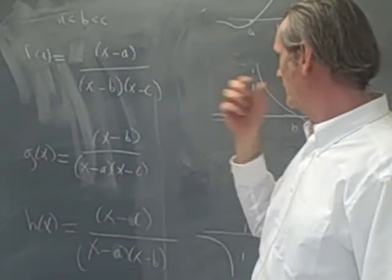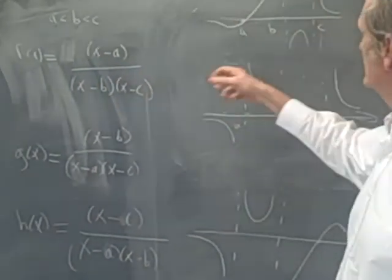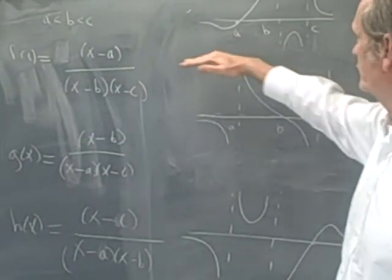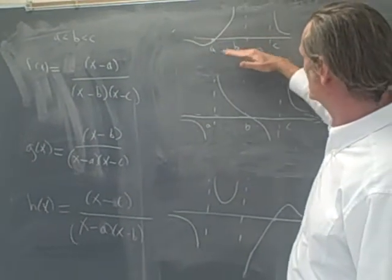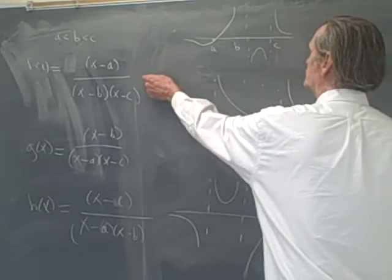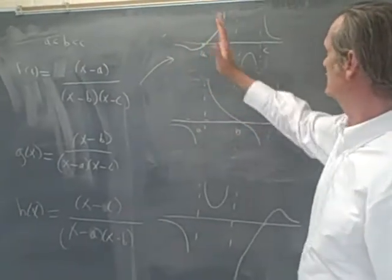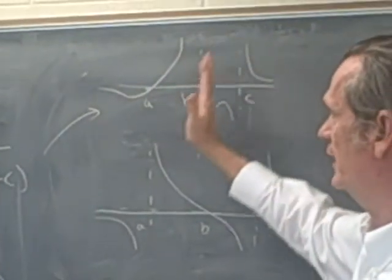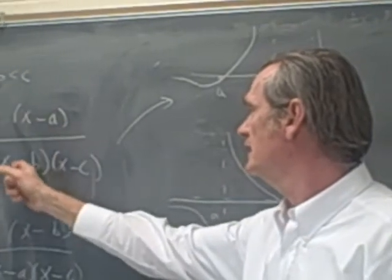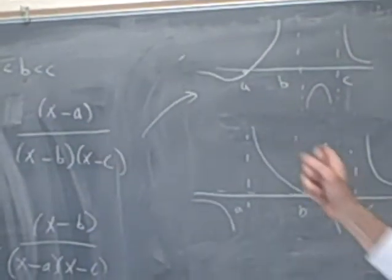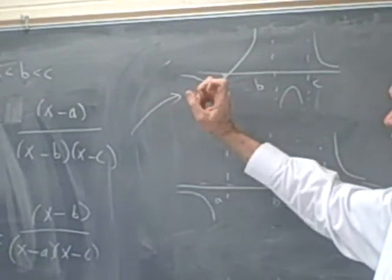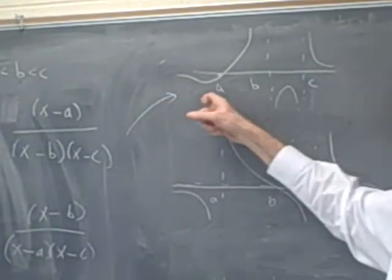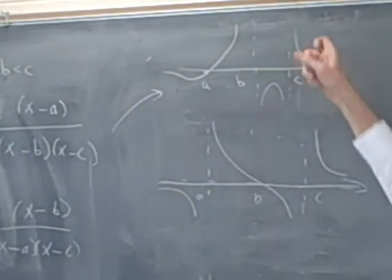If we just look at the graphs of those, then without respect to where the y-axis belongs, this function will look something like this. The y-axis will be in here somewhere. If you work out a sign chart, you find the function is negative to the far left, positive, negative, then positive.